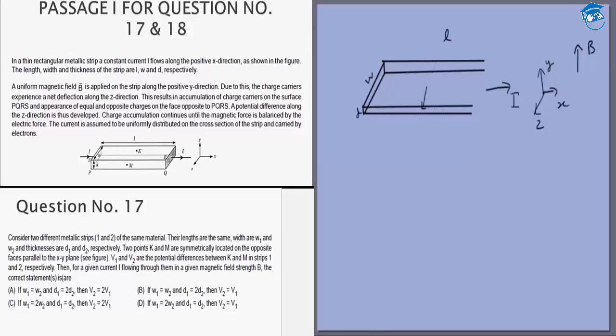First, let's calculate the force on a particle. We know that the current density is equal to n e times V_D drift velocity. That means the current I is n e times the area of cross section, which is W D times V_D. Therefore, V_D, the drift velocity, is I divided by n e W D.